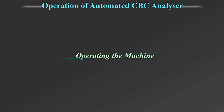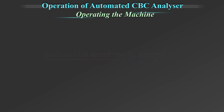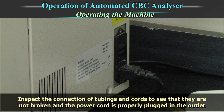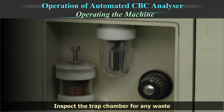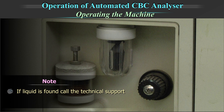Before the machine is turned on, inspect the reagents and inspect the connection of tubings and cords to ensure they are not broken and the power cord is properly plugged in. Inspect the trap chamber for any waste. The trap chamber indicates the hydraulic and vacuum status of the equipment and should have no fluid in it. If fluid is found, call technical support. Do not open the trap chamber.